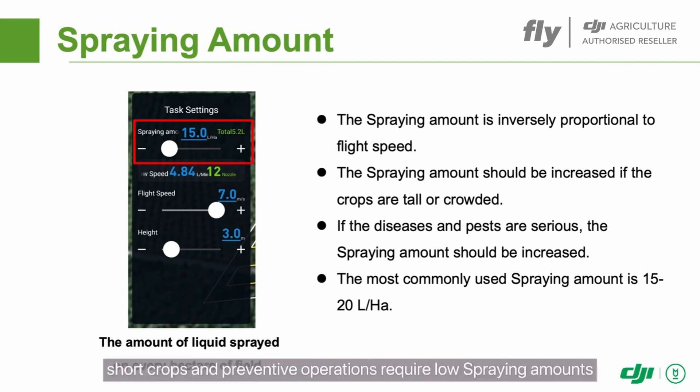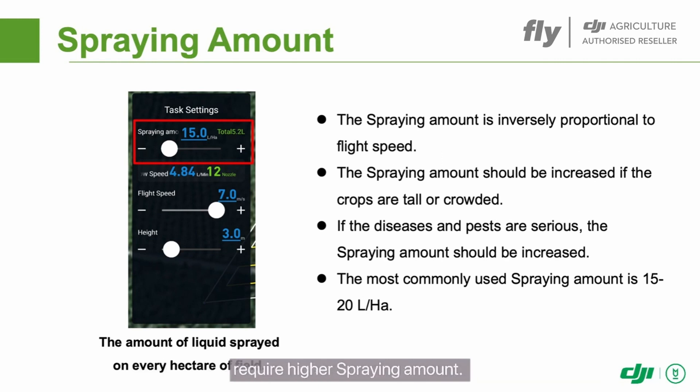Generally, short crops and preventative operations require low spraying amounts, while leafy crops like trees and weeding operations require higher spraying amounts. This parameter should be set based on your actual needs.